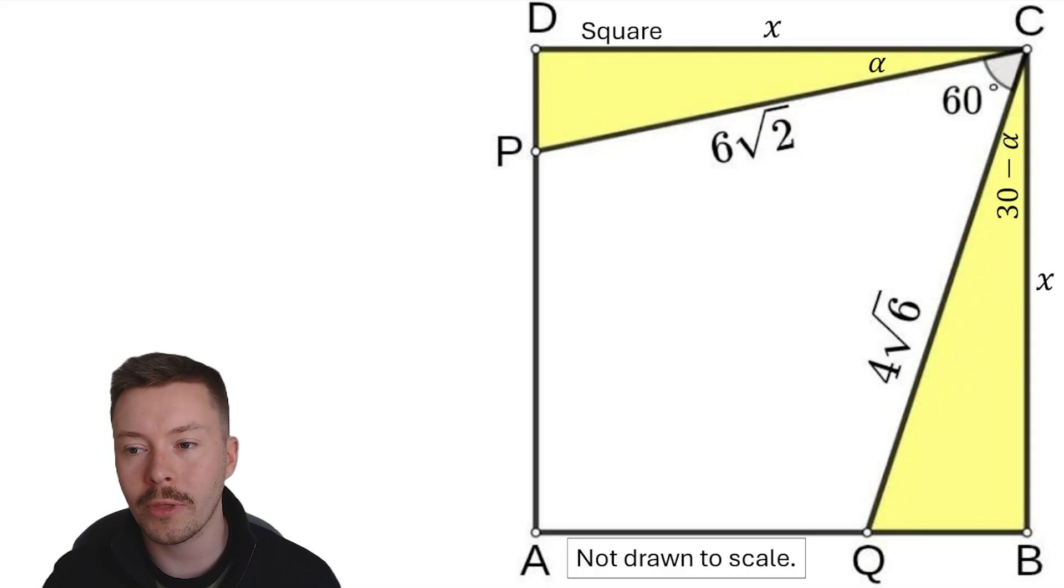Now we know that the square must have the same side length, so I'm going to call those x for now. I'm then going to use right angle trigonometry because obviously we've got right angles in the corners of the square to get some expressions for x.